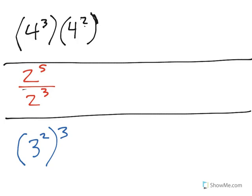Now the first one we can see we have 4 to the third times 4 to the second. Now basically what this is telling us to do is that we're going to be multiplying these two together.